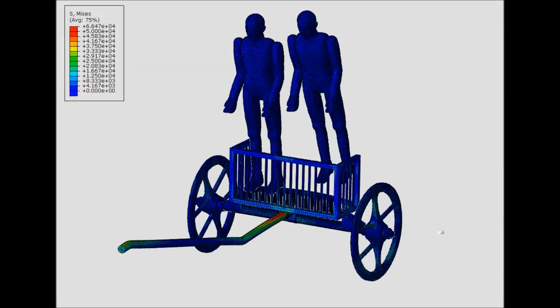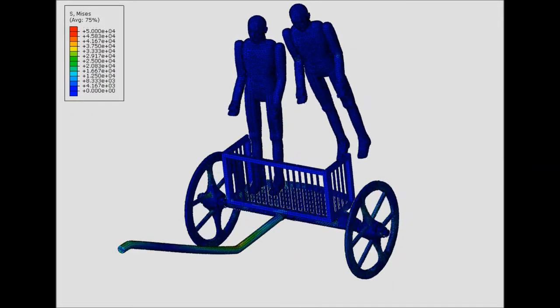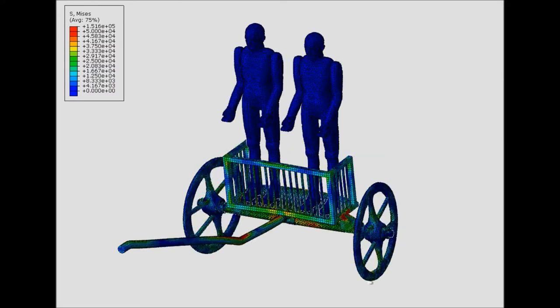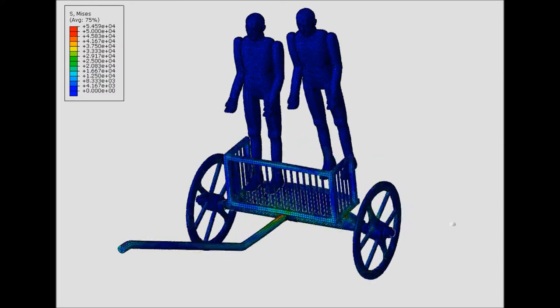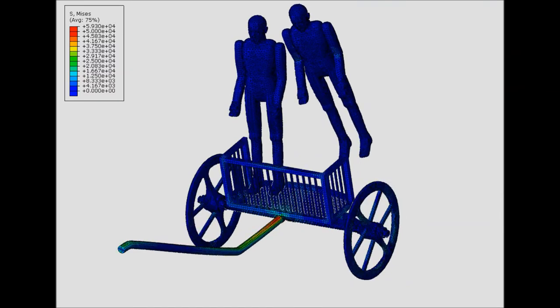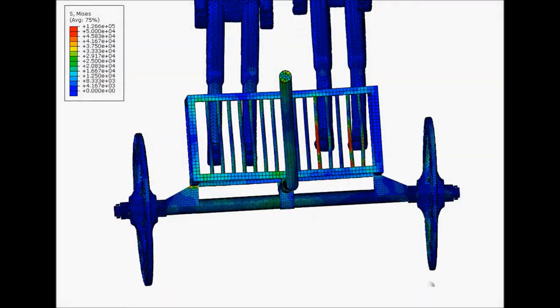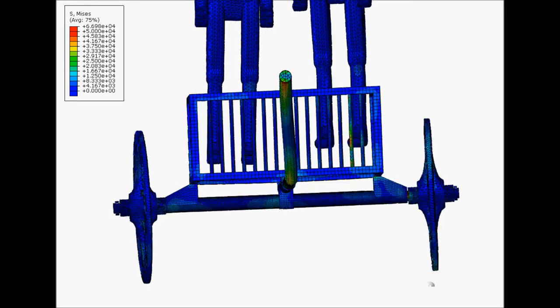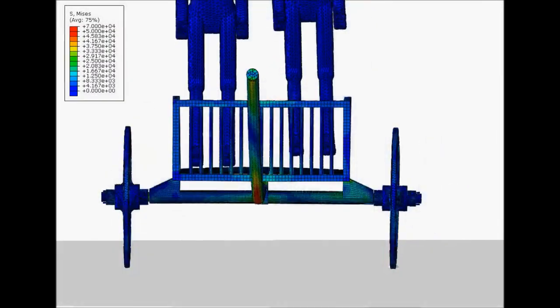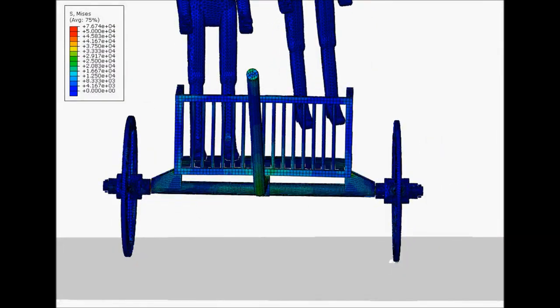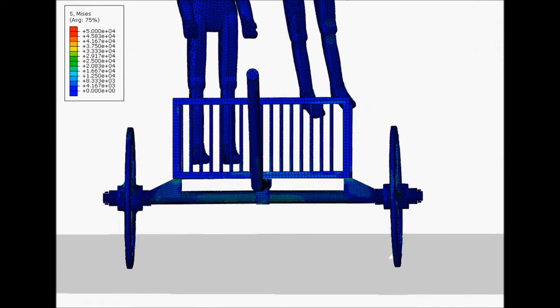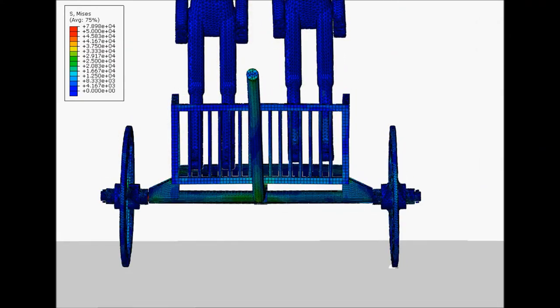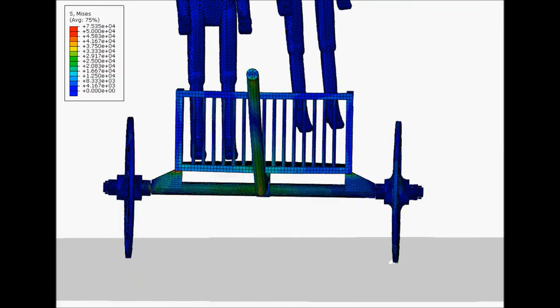In asymmetric bump, the passenger standing on the side of the asperity is thrown more in height than the other one, as expected. The pole acts as a torsional spring, either for the chariot with central axle and for the chariot with rear axle. The dependence of the chariot response on the axle position did not appear so relevant.